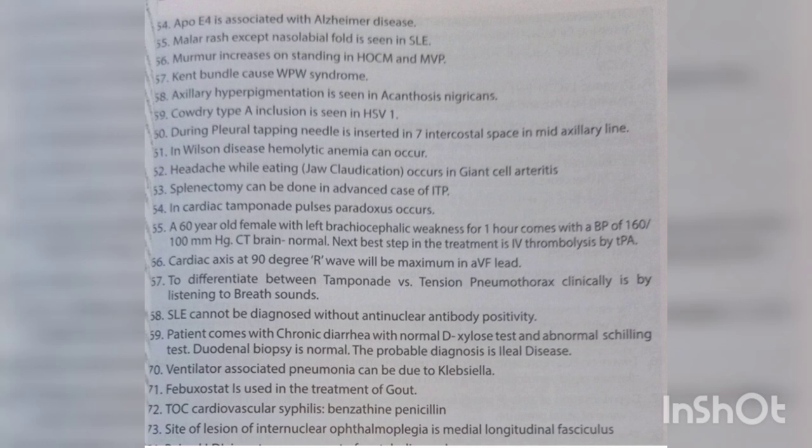During pleural tapping, the needle is inserted in the seventh intercostal space in the mid-axillary line. In Wilson's disease, hemolytic anemia can occur. Jaw claudication occurs in giant cell arteritis. Splenectomy can be done in advanced cases of ITP. In cardiac tamponade, pulsus paradoxus occurs.